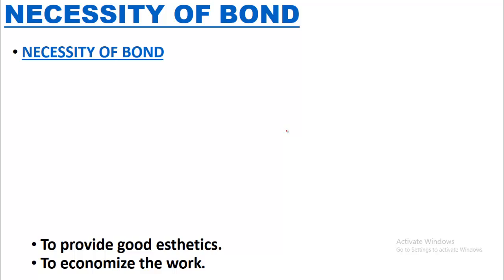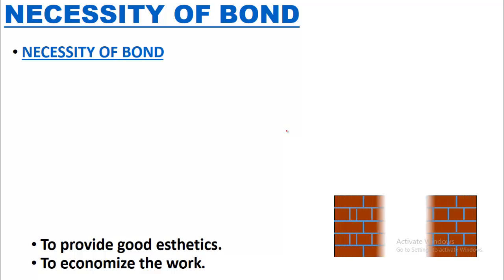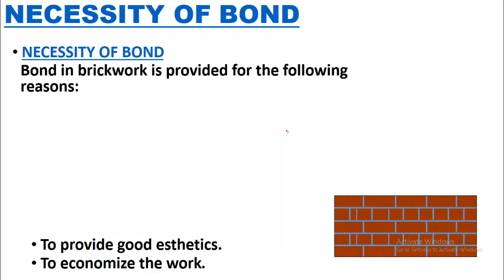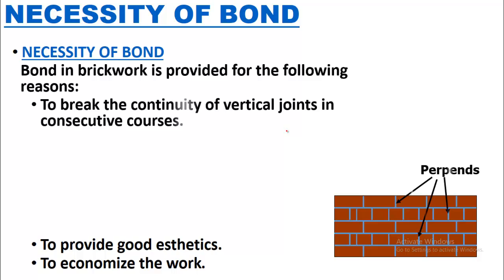What is the necessity of bond? Bond in brick masonry is provided for the following reasons: first, to break the continuity of vertical joints in consecutive courses. These vertical joints are called perpends, and perpends should not come directly over one another — different bond patterns are followed to achieve this.